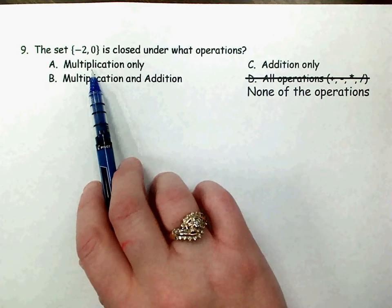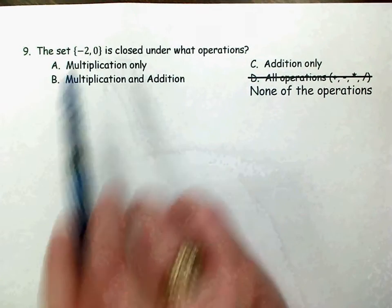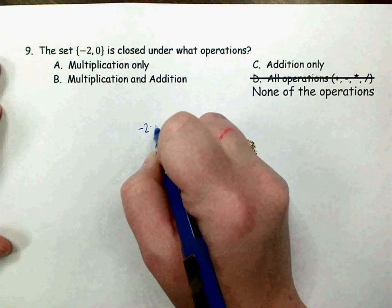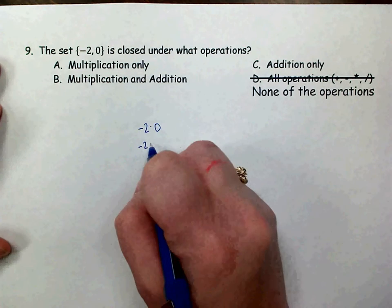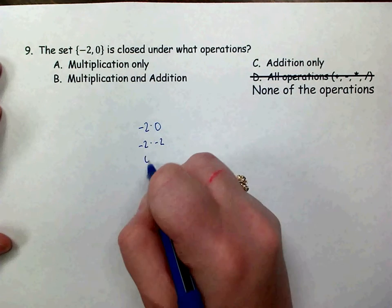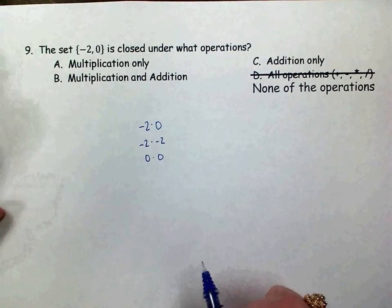So for example, if multiplication were closed for this set of numbers, it would mean if I multiply negative 2 times 0, or negative 2 times itself, or 0 times itself, those are the only options.